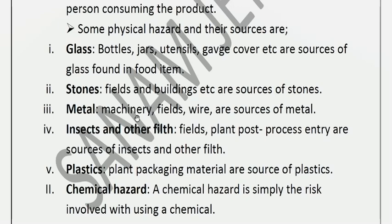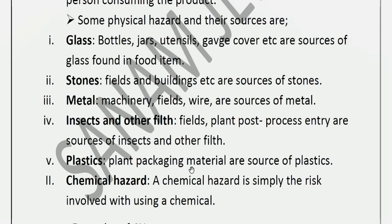Metal sources of physical hazards include machinery, fields, and wires. Insects and other organisms from fields and plant post-processing are also sources of physical hazards known as insect sources.